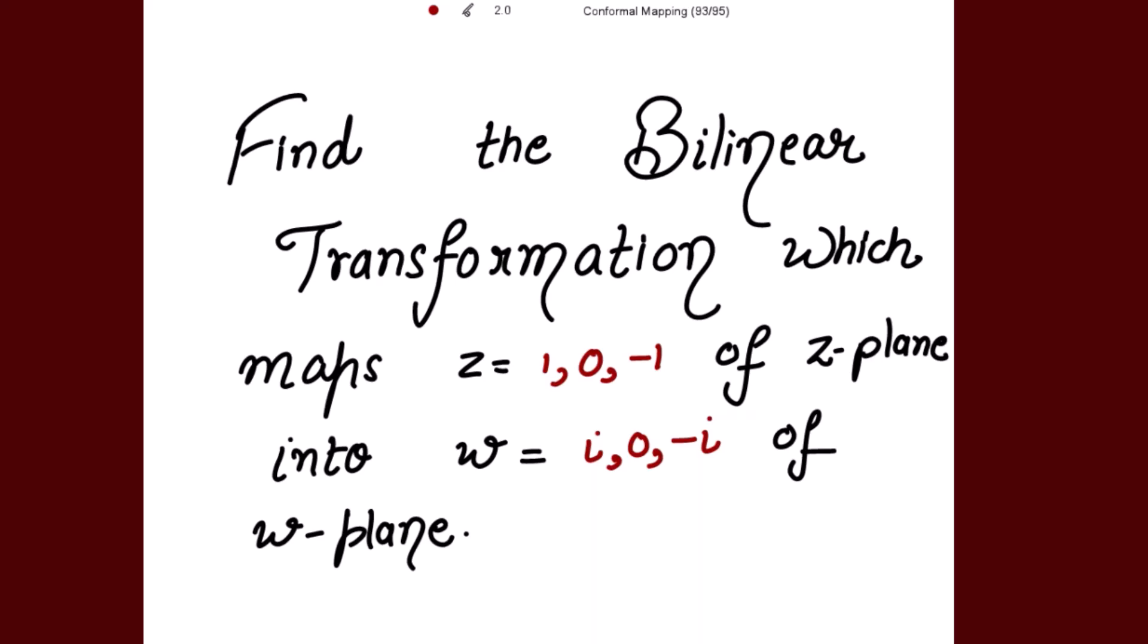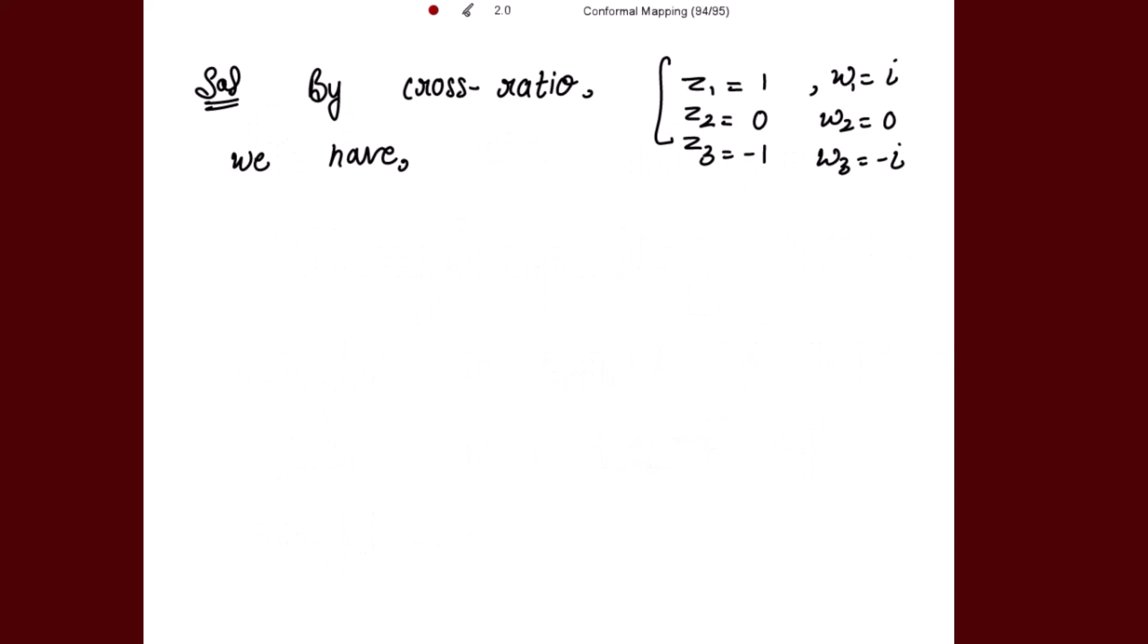We have to find the bilinear transformation by the cross ratio method. Consider z₁, z₂, z₃ as 1, 0, -1 respectively, and w₁, w₂, w₃ as iota, 0, -iota respectively.